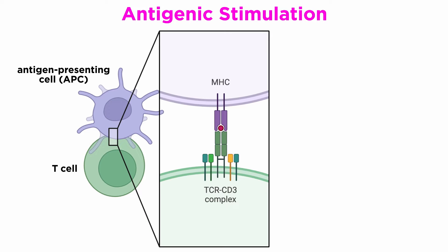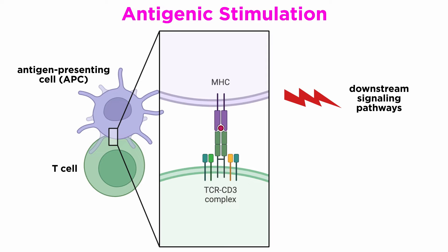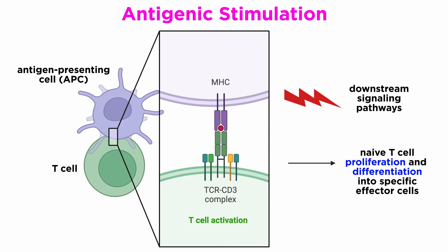The differentiation of naive T-cells begins with the antigenic stimulation that is a result of an interaction between TCR and CD4. They play a role as co-receptors with the antigen MHC2 complex, which is presented by professional antigen-presenting cells, or APCs. TCR coupled with CD3 activation consequently induces a network of downstream signaling pathways. The CD3 antigen is a surface structure associated with the TCR. These steps result in a cascade of signal transduction that eventually leads to naive T-cell proliferation and differentiation into specific effector cells.